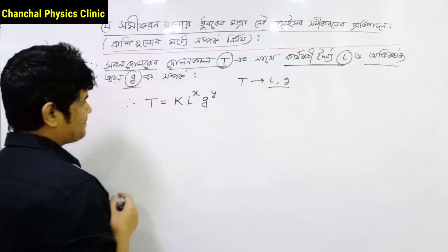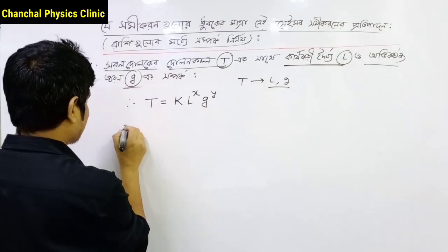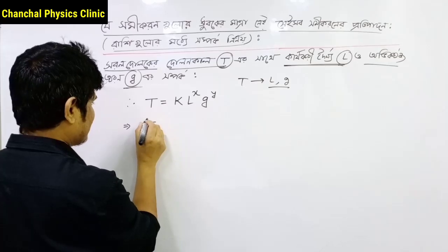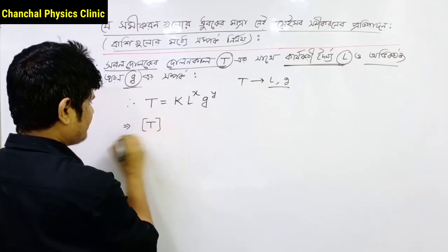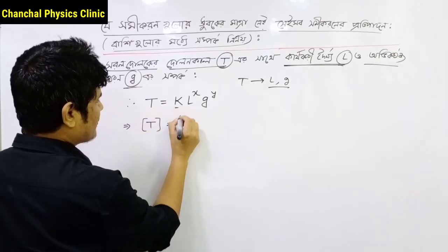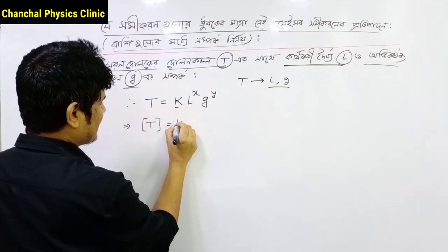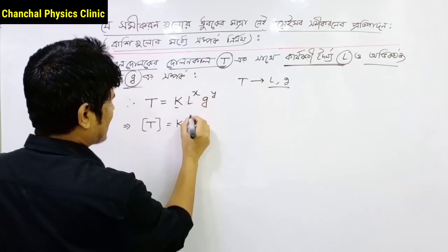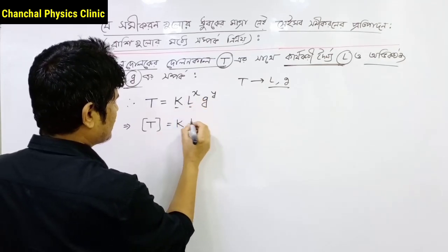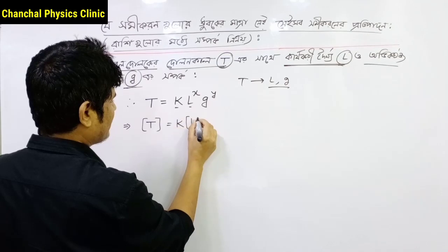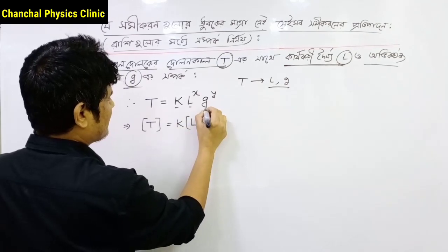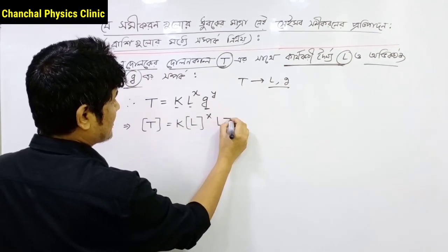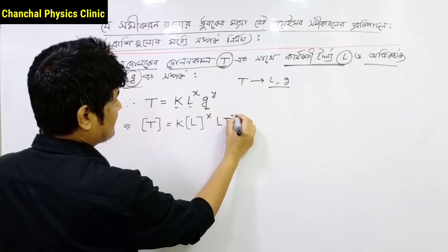What do we mean? When we know T is equal to T, and T is equal to T. This is equal to T. This is equal to K. L is equal to L, or L is equal to X. The other thing is L is equal to L T inverse 2.